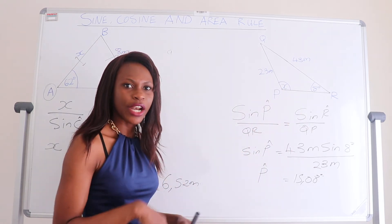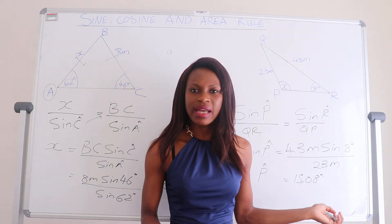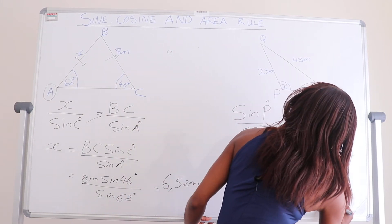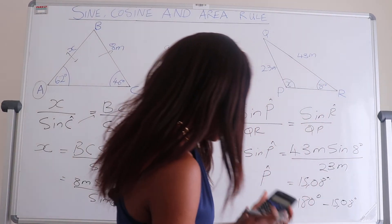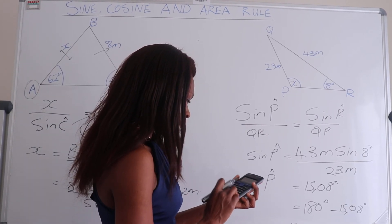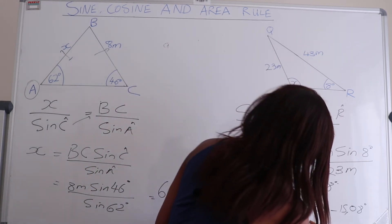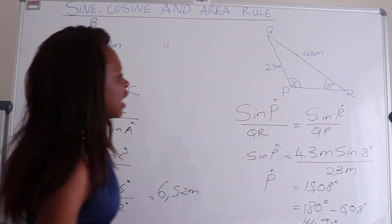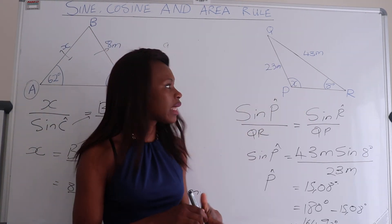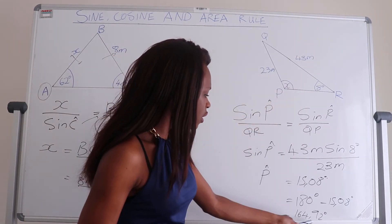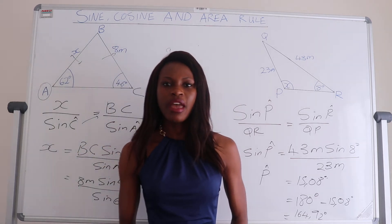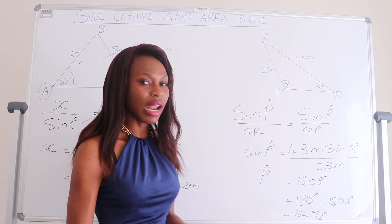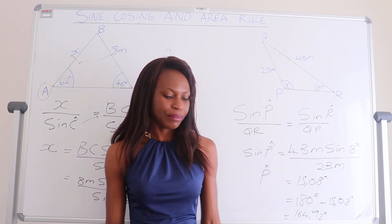To find the second answer in the ambiguous case, you do 180 degrees minus the answer you found using the sine rule. So 180 degrees minus 15.08 degrees gives 164.92 degrees. This makes sense because looking at the triangle, angle P does appear to be greater than 90 degrees. So this is called an ambiguous question, where you get two answers when finding an angle using the sine rule.